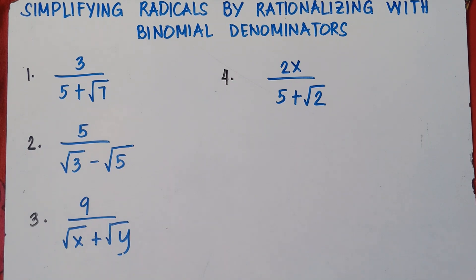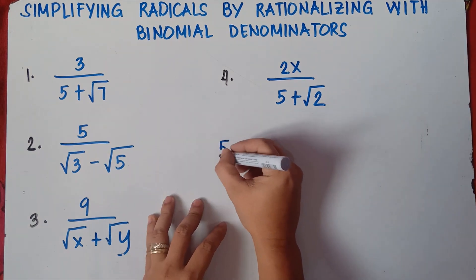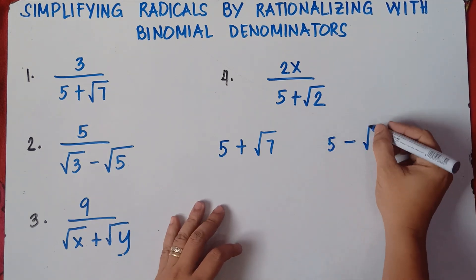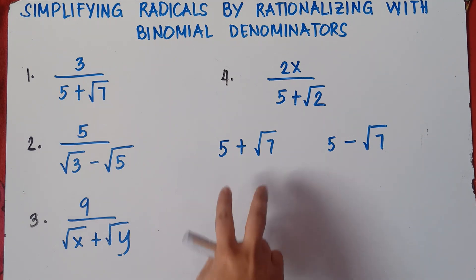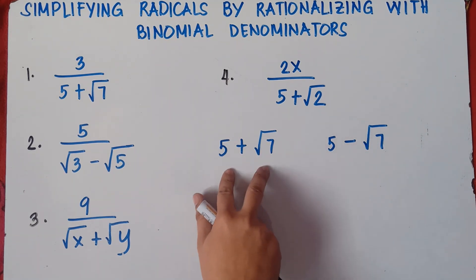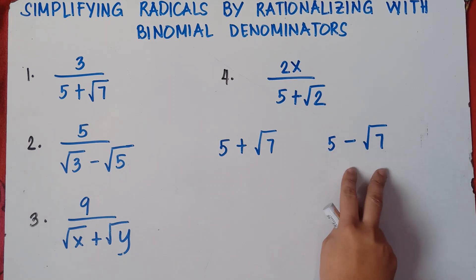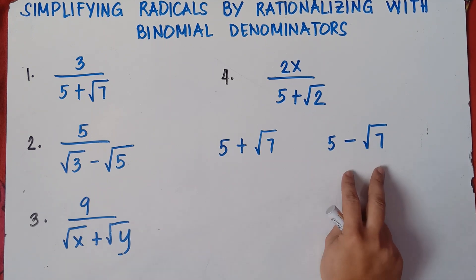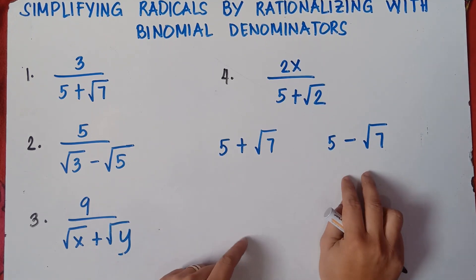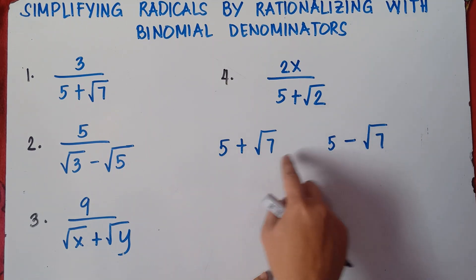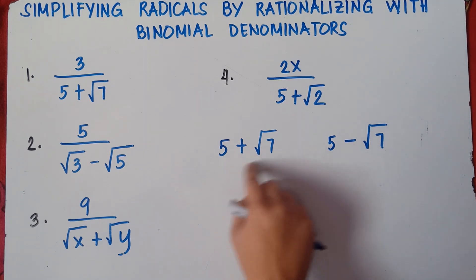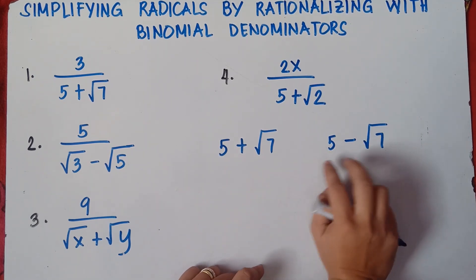To eliminate the radicals on the denominator, we need to multiply by its conjugate. For example, the conjugate of 5 plus square root of 7 is 5 minus square root of 7. To get the conjugate, simply copy the first term and the second term, and just change the sign. If it's positive, you change it to negative.